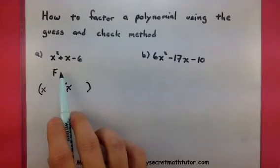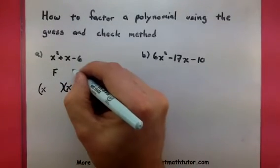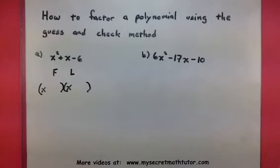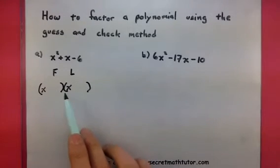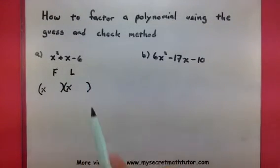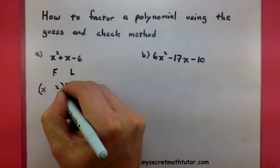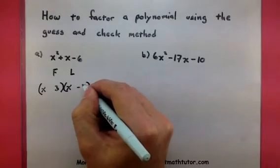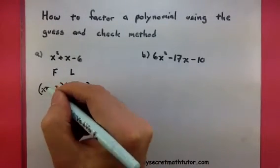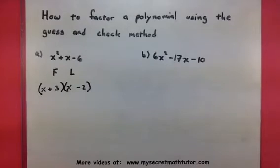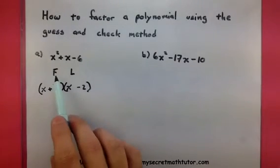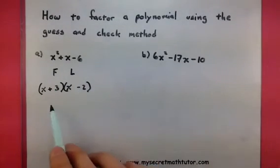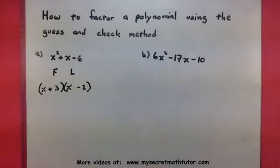Now, rather than think of the outside and inside terms, I jump to my last terms and I think, what do my last terms need to be in order to multiply to give me a negative 6? Let's see. Well, one guess that I might throw in there is a positive 3 and a negative 2. So, by doing my first terms and my last terms, I've come up with a guess as to what my two pieces need to be.